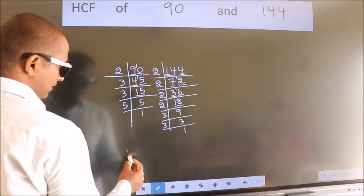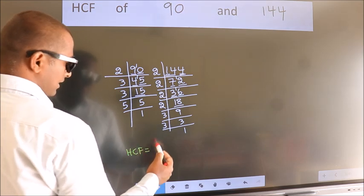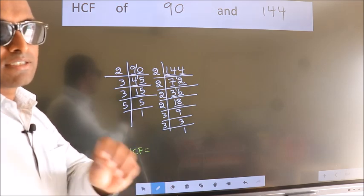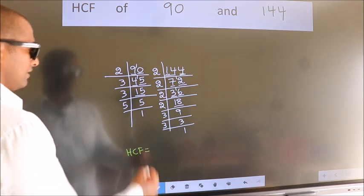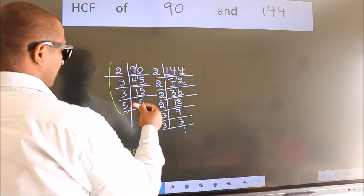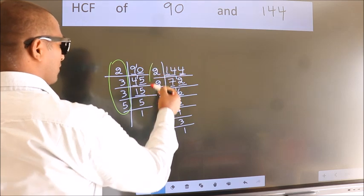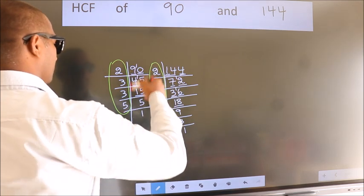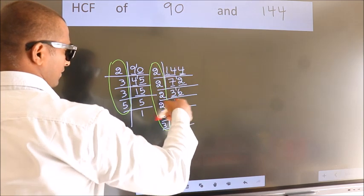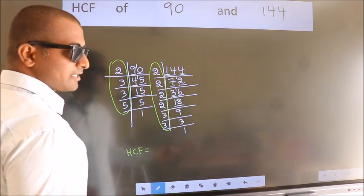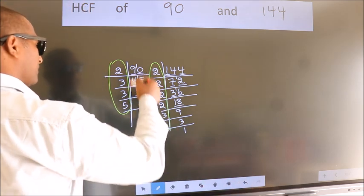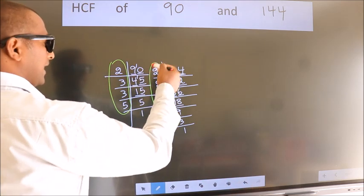Therefore, our HCF is, HCF is the product of the numbers which should be present over here and also here, here and here. So now let us find the numbers which should be present here and here.